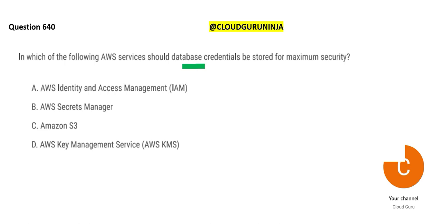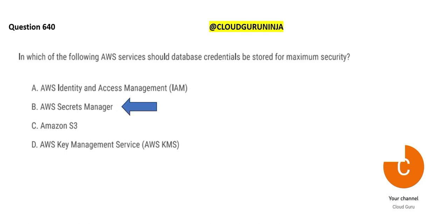AWS provides Secrets Manager — put all your secrets there. A password is a secret; credentials are secrets. IAM is about giving access to services, and KMS is about encryption keys to encrypt data — encryption at rest and encryption in transit. For encryption in transit, Certificate Manager is used. We won't use S3 here because Secrets Manager is far better. So option B, Secrets Manager, is the correct answer.